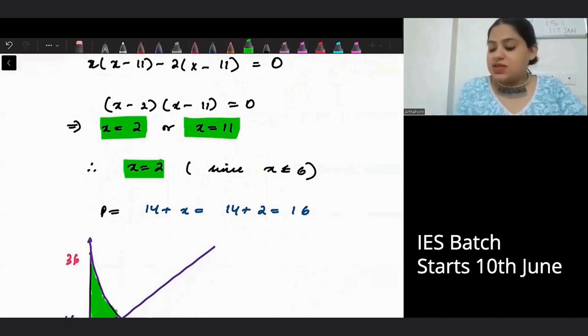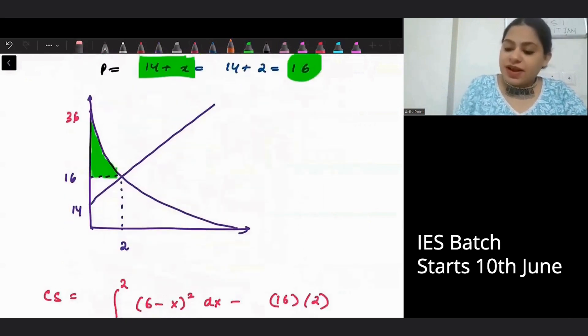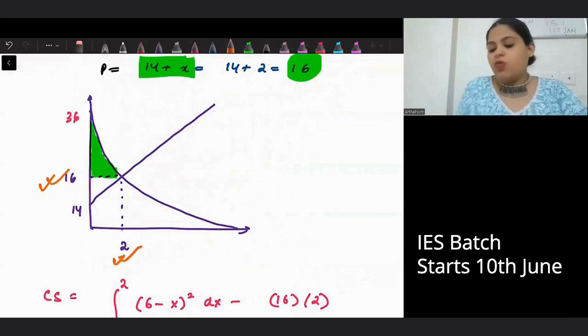When x is 2, what will be your price? Price is 14 plus x from the supply side. So it will be 16. So we have got that my equilibrium price is 16 and equilibrium quantity is 2.